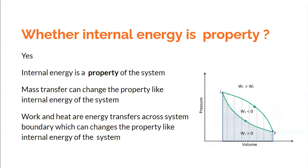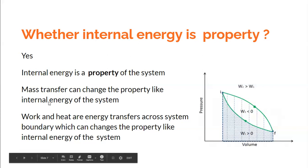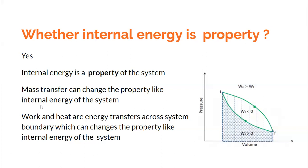Internal energy, on the other hand, is a property of the system. A system at state with pressure P1, volume V1, and temperature T1 also has a certain internal energy. This internal energy within the system can change when there is a thermodynamic process — either by mass transfer or energy transfer in the form of heat and work. Whenever there is a change in state, the internal energy also changes, and hence internal energy is a property — unlike heat and work. Mass transfer can change properties like pressure, volume, temperature, and internal energy.